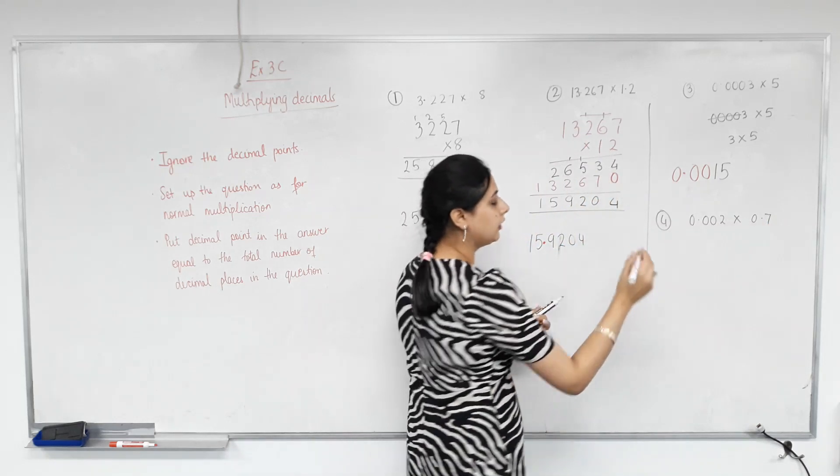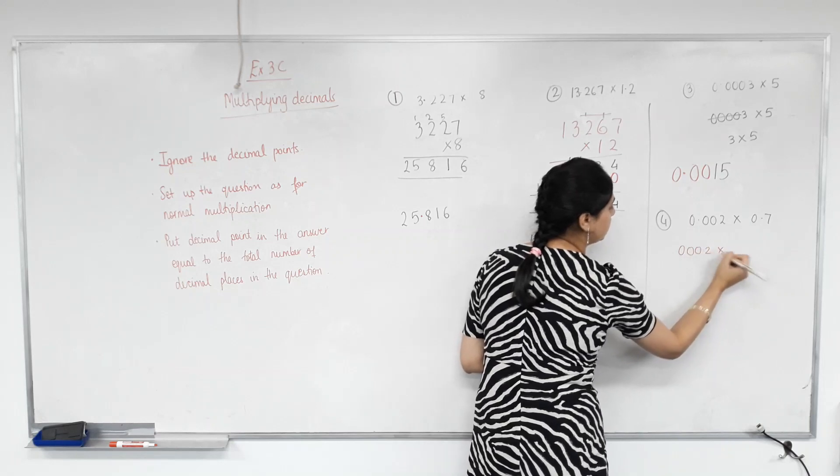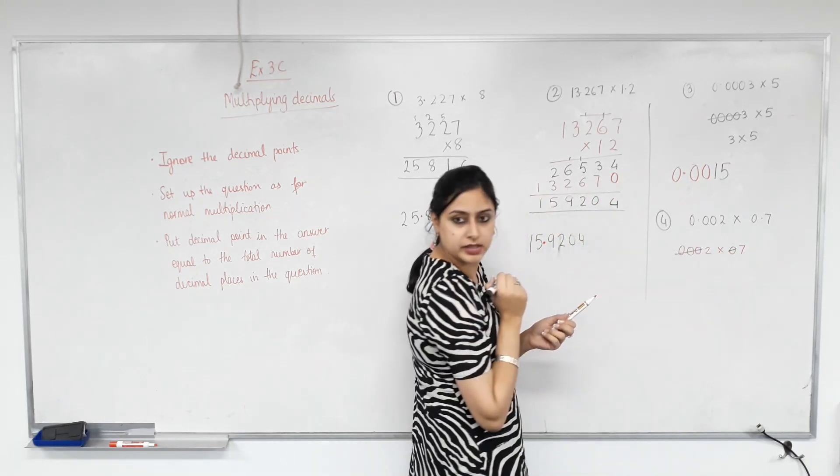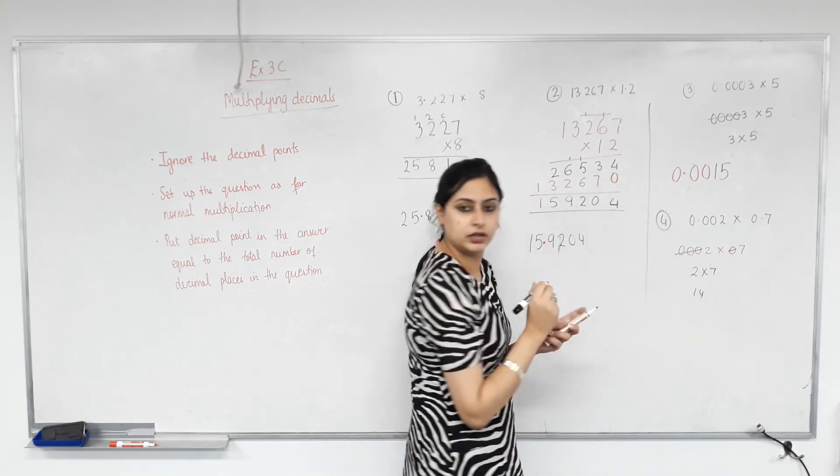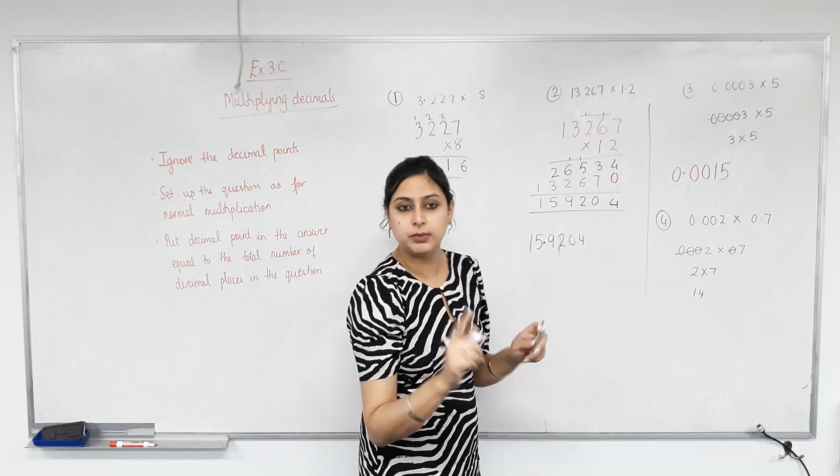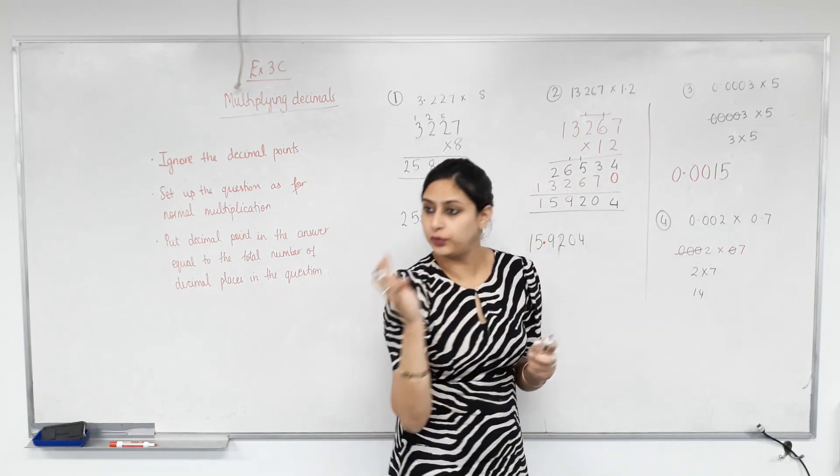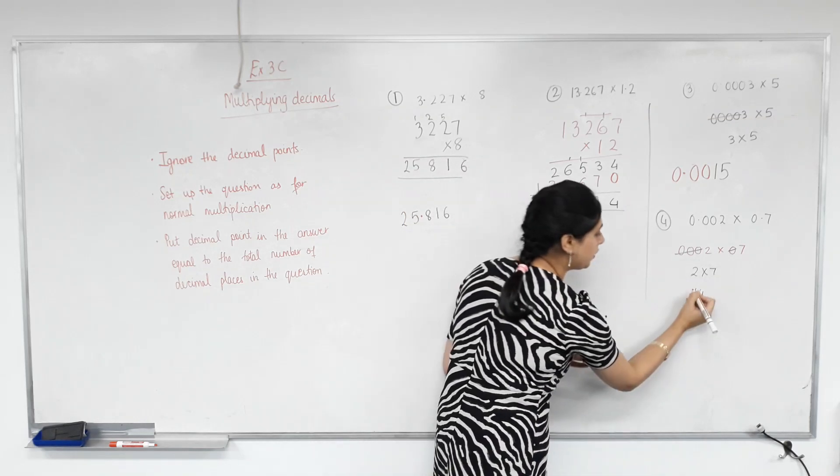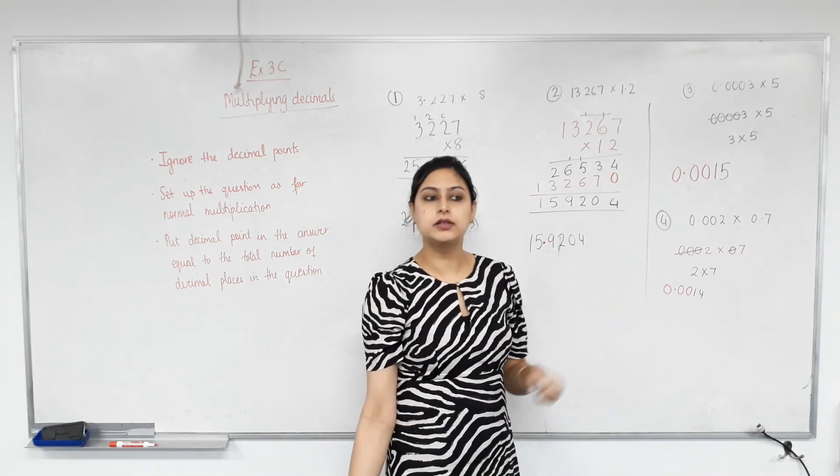Again, first, ignore the decimals. So 0, 0, 0, 2 times 7. Which looks weird. We don't really need these. Becomes 2 times 7, which is 14. Let's count the total number of decimal places. 1, 2, 3, 4. We need 4 decimal places in the answer. So 1, 2. How many zeros? 2. So 3, 4. Is that right? That's it.